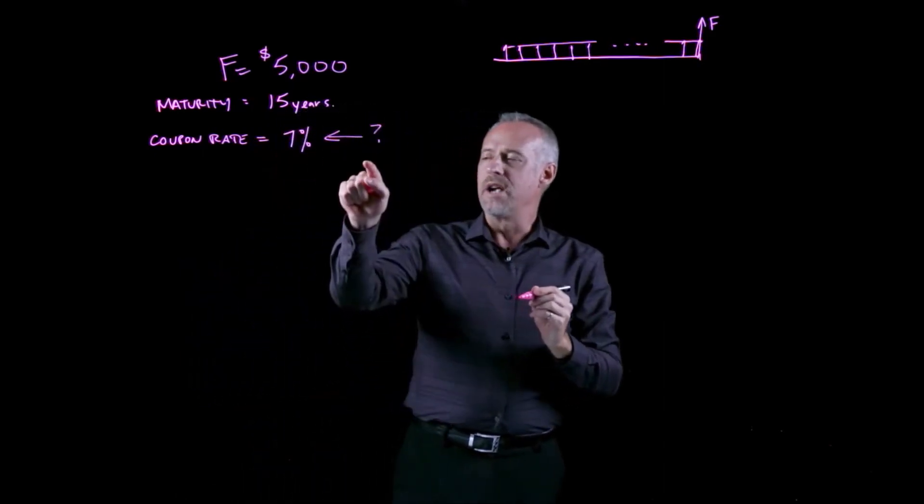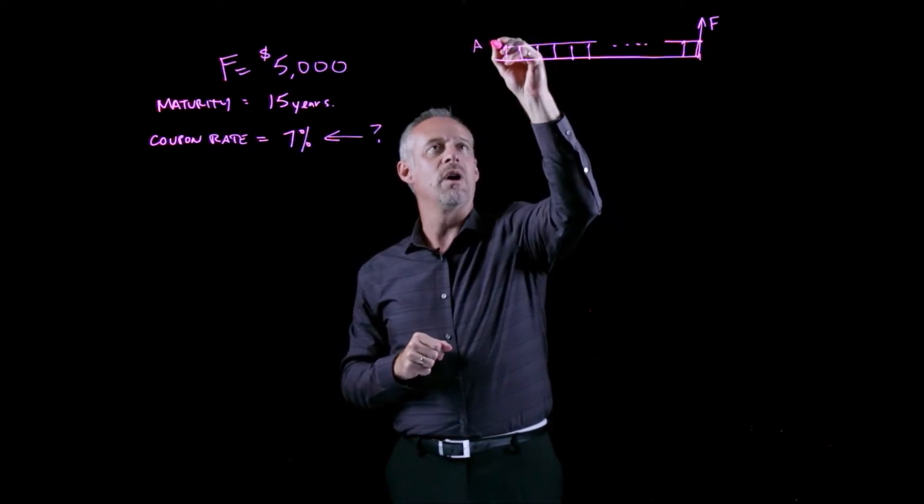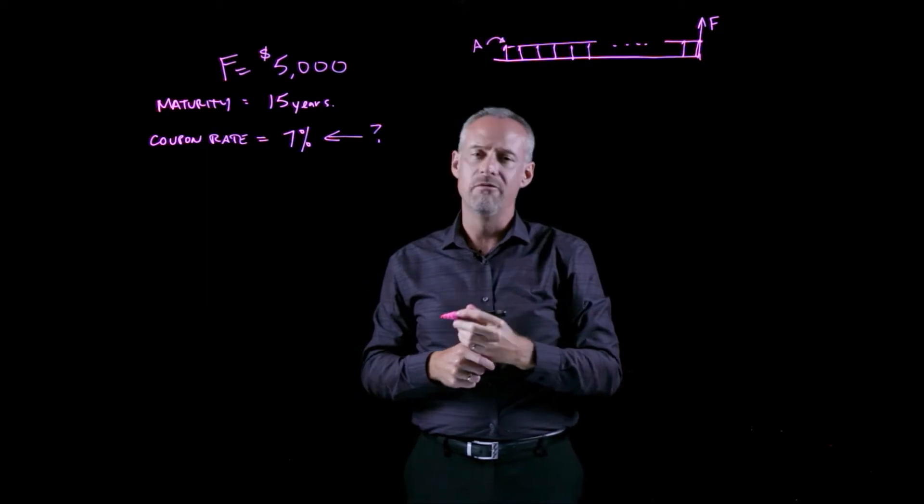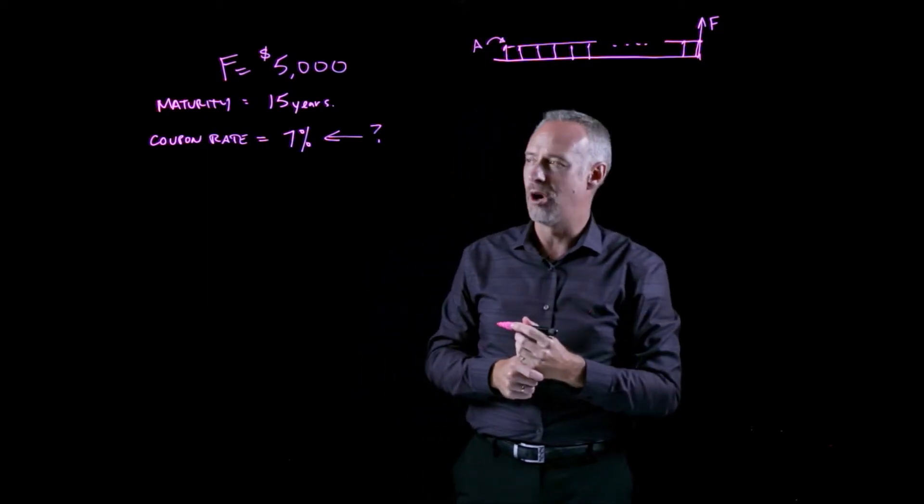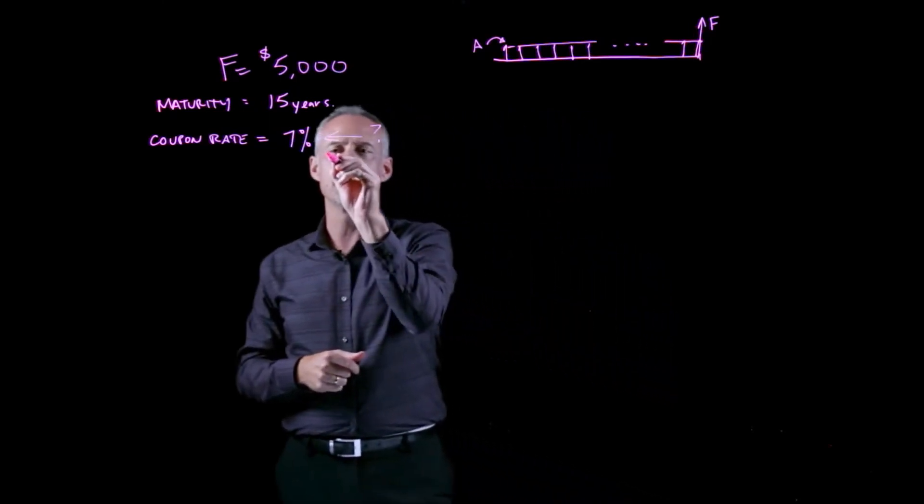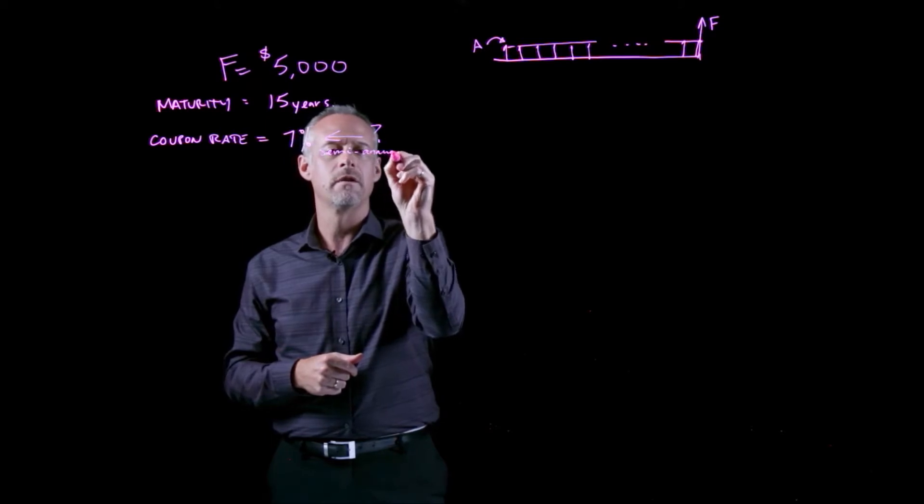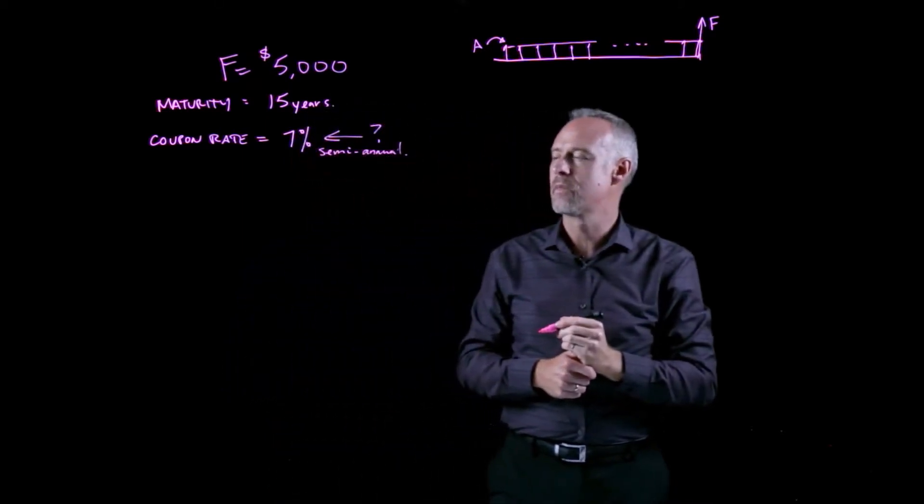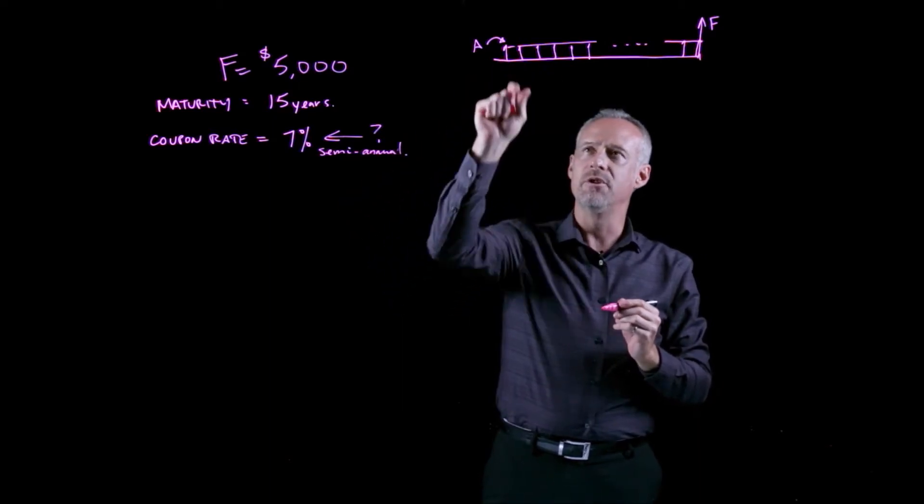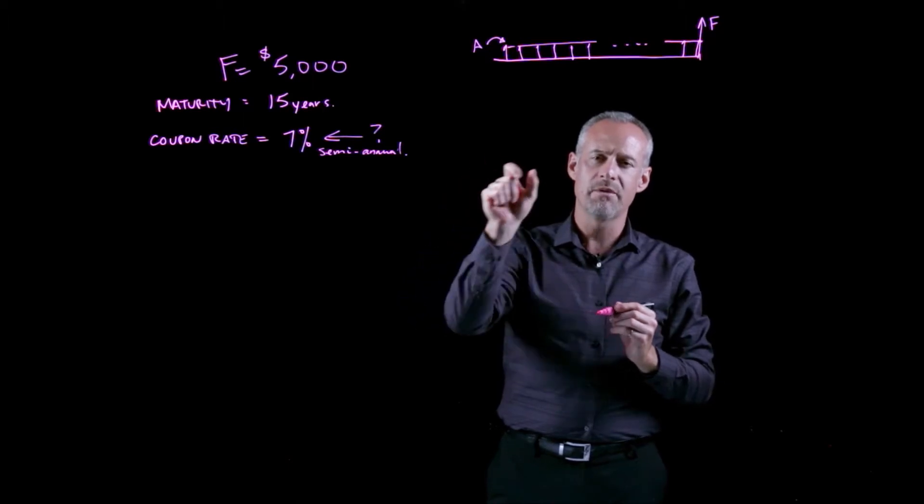The coupon rate is the number we use to calculate the amount or the value of this annuity. The convention that's used for bonds is that the coupon rates are quoted as semi-annual rates.